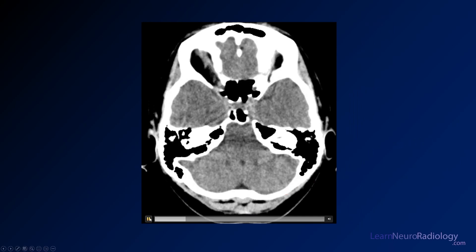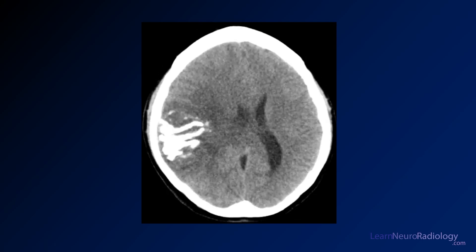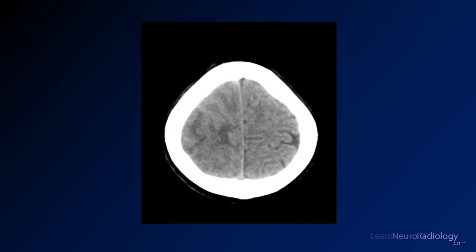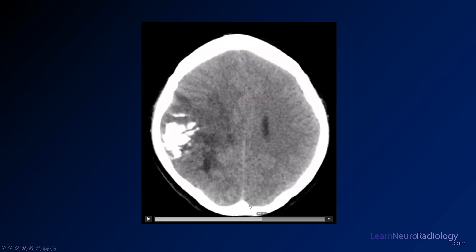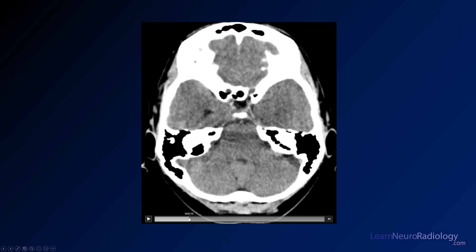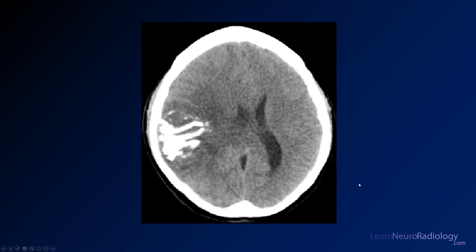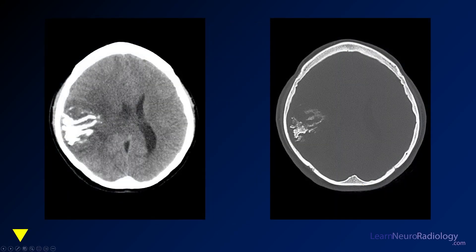I'm going to scroll through these for you. You can see an abnormality on the patient's right-hand side. I'm going to stop here — sort of an infiltrating, expansile process. You see some very dense material in the middle there, very similar to bone, so that's probably some calcification. So you have a tumor, it's calcified. Here I've got two windows for you: a brain window, similar to what we scrolled through, and a bone window, again letting you see that dense calcification in the middle.